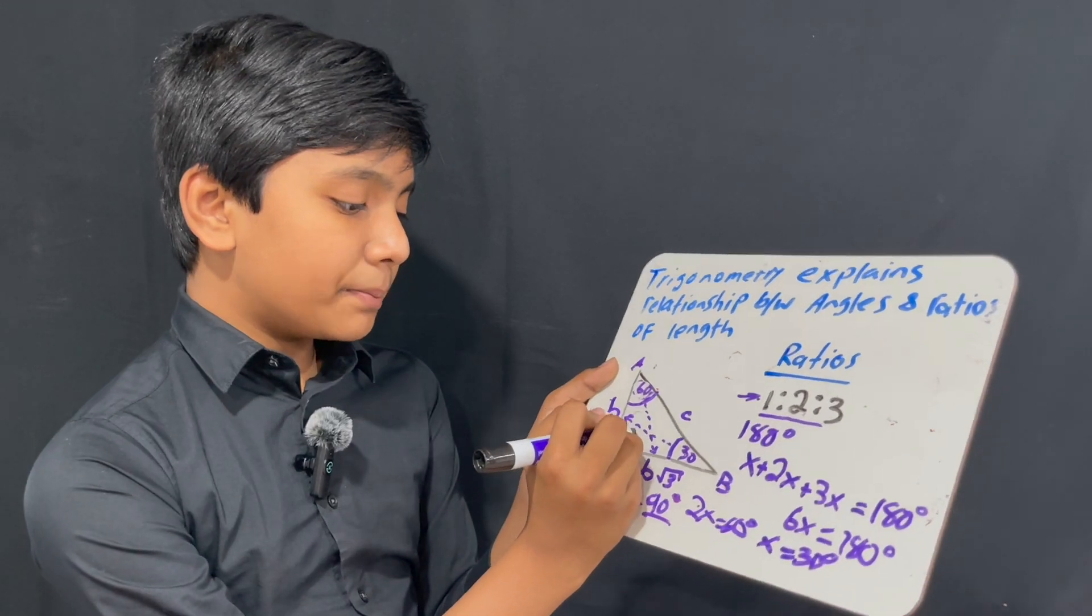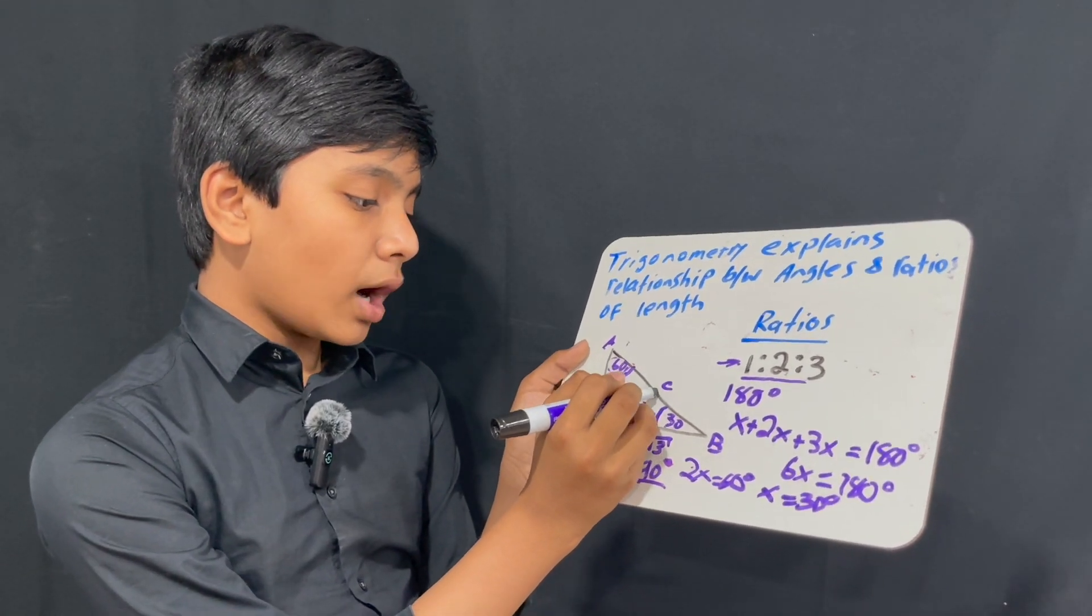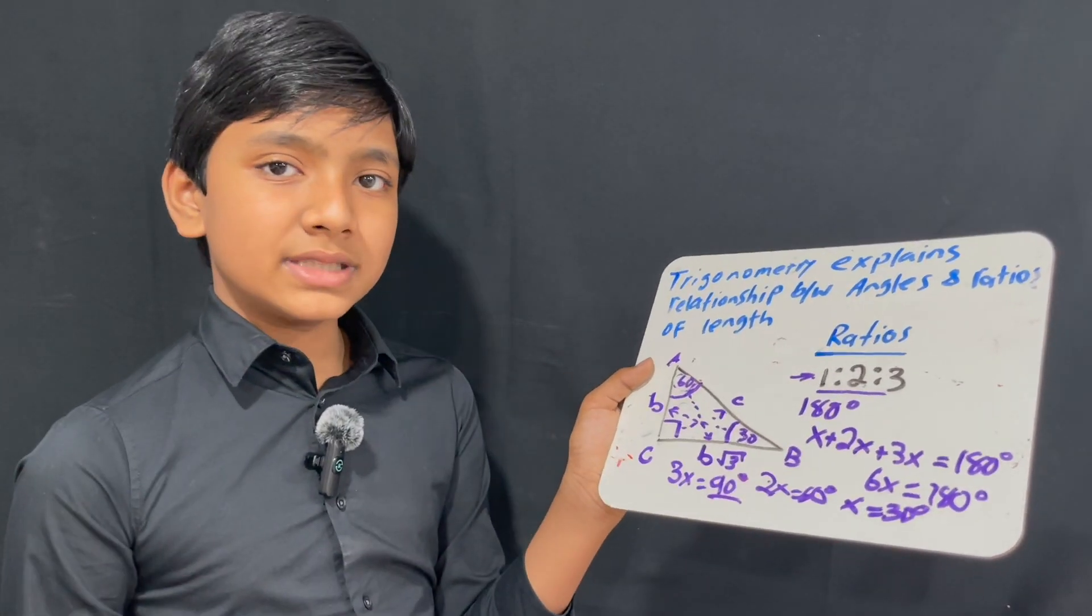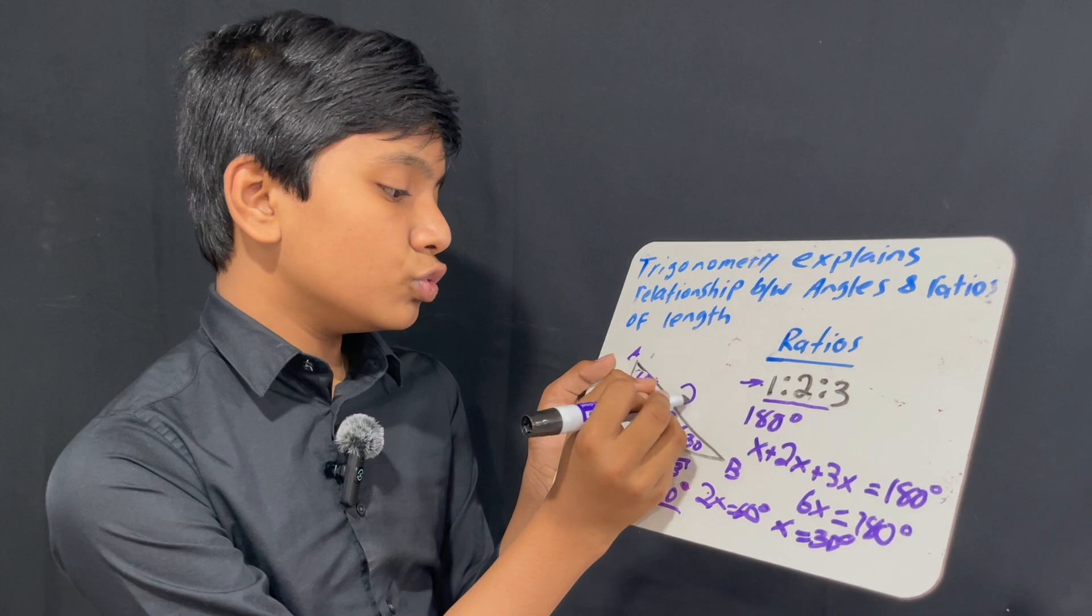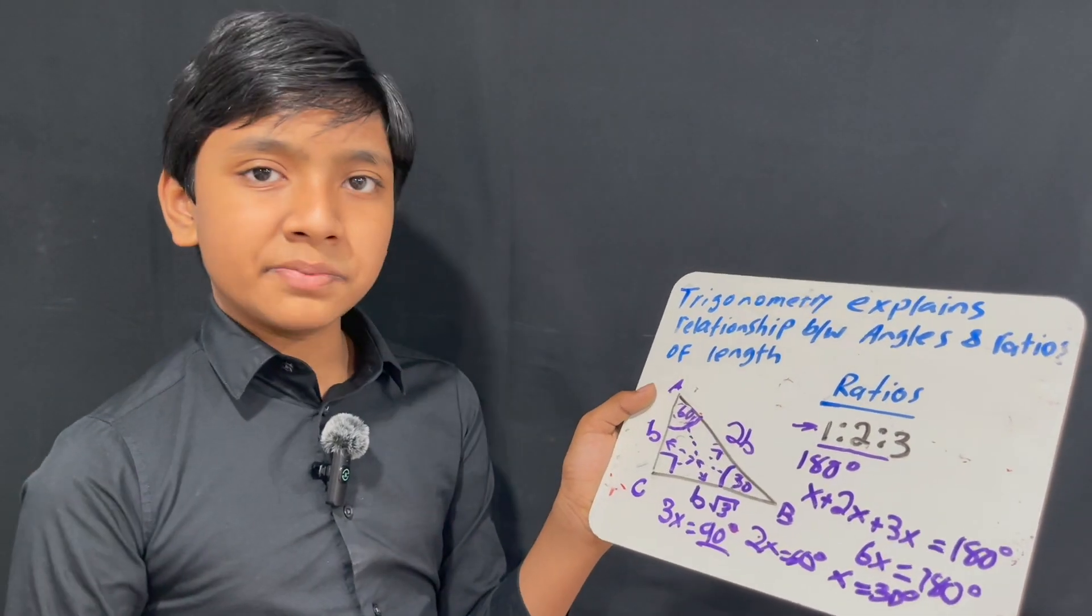And then, c is the biggest because it is opposite to the biggest angle, 90 degrees, which makes it a total of 2b, or twice b's length.